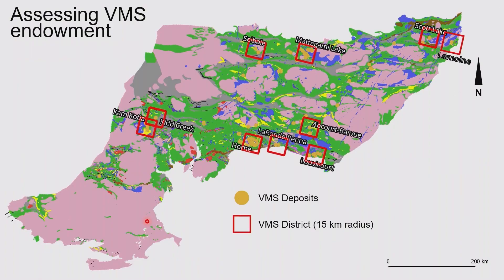Now that we have constraints on the proportion of felsic rocks in the assemblages, it would be interesting to go in and look at some of these VMS districts to see if there's a change there. Because even though people through the years have said it's good to have felsic rocks with VMS and they're often host to VMS deposits, can we actually see it if we try to quantify it? Can we show it with this dataset now that we're able to constrain it by assemblage? These are just some of the bigger VMS districts — obviously there are more deposits in the Abitibi than just these.